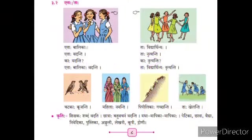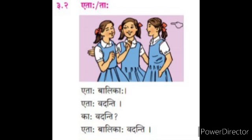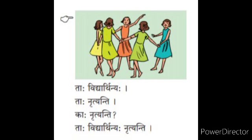Similarly, like the Pullingi verbs, we now learn about the Strillingi words — the plural form of etat is etaha, and of tat is taha. First picture: etaha balikaha — these are girls. Etaha vadanti — they are talking. Kaha vadanti? — Who are talking? Etaha balikaha vadanti — these girls are talking. Second: taha vidyarthinaha — those are girl students. Taha nrutyanti — they are dancing. Kaha nrutyanti? — Who are dancing? Taha vidyarthinaha nrutyanti — those girl students are dancing.